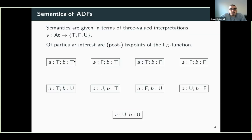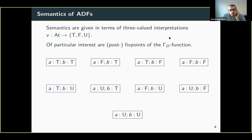The semantics of ADFs are rather complicated and I won't go into detail in this talk — we can discuss it in the poster session. But importantly, the semantics are given in terms of three-valued interpretations, where every argument is assigned true, false, or undecided. The other ingredient is the so-called gamma function, which maps three-valued interpretations to other three-valued interpretations, and the semantics select certain fixed points or post-fixed points of this gamma function.